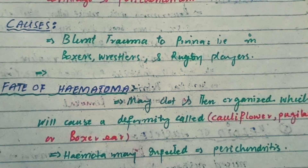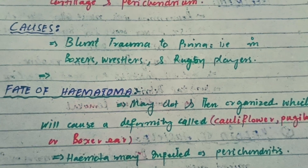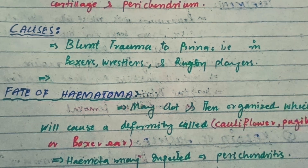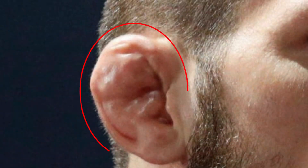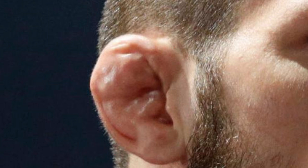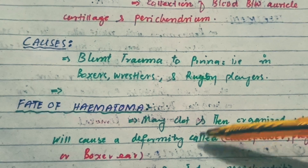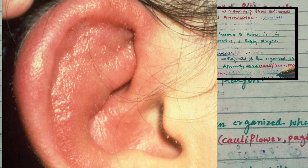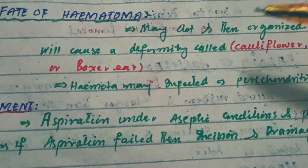This organization produces a special type of deformity in the pinna called cauliflower ear, also known as boxer's ear. As you can see on screen, the hematoma may also get infected and cause severe perichondritis.